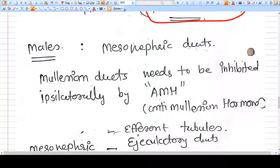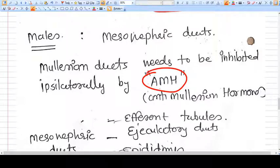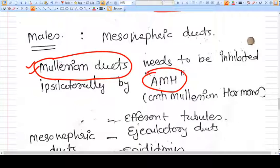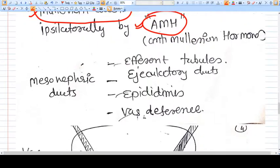Mullerian ducts are also present in males but they will be inhibited by one particular hormone, that is anti-Mullerian hormone (AMH), which is secreted by Sertoli cells. The very basic uniqueness with Mullerian ducts is they need to be inhibited. If they are not inhibited, then they will develop. If AMH is not there, then even males will have uterus and fallopian tubes, which are developed from the Mullerian ducts. Mullerian ducts need to be inhibited by AMH in males.